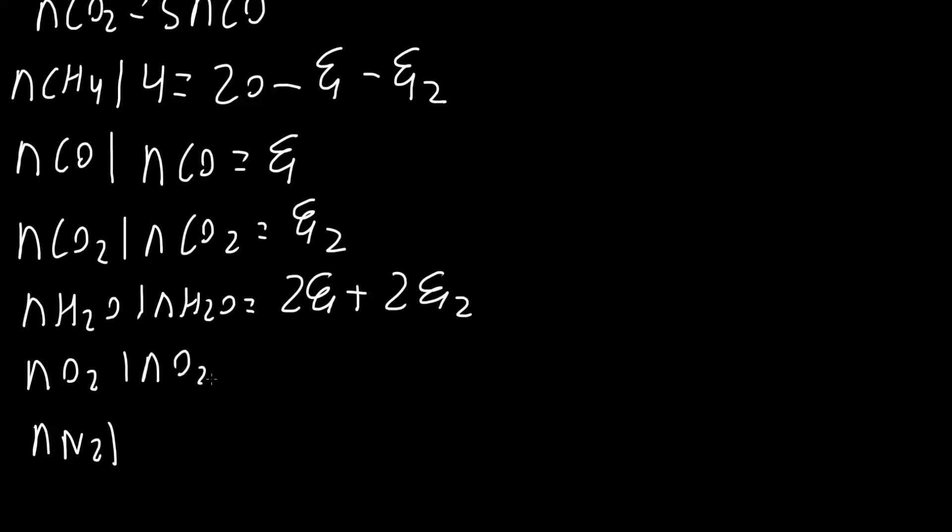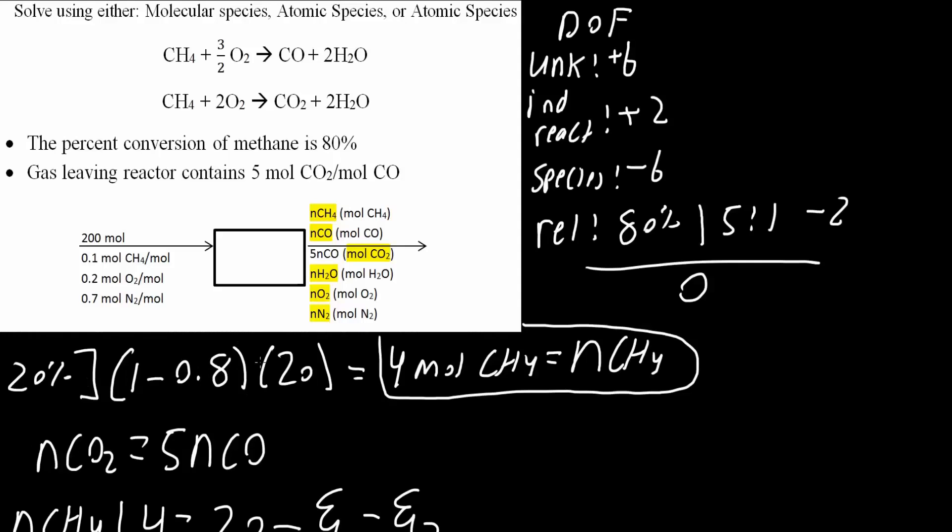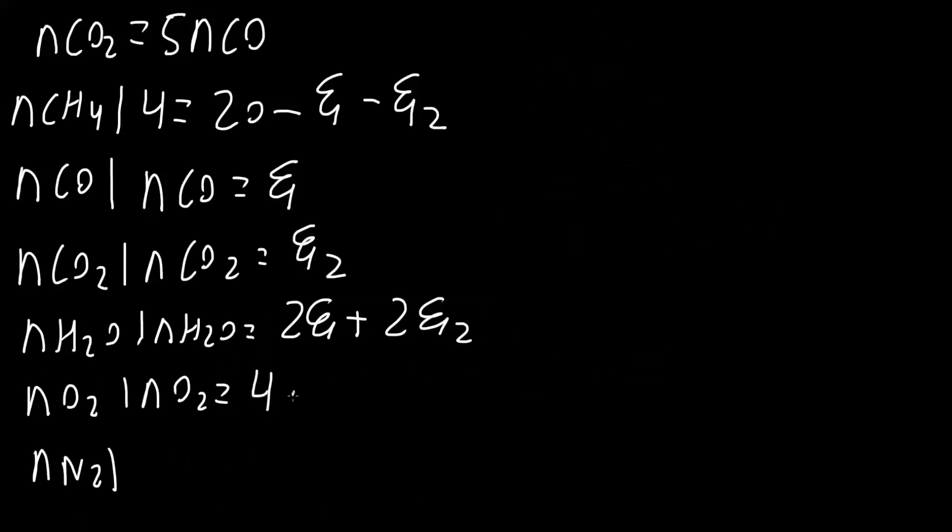Then oxygen, NO2 is equal to, now oxygen was in our input, we had 200 times 0.2, so we had 40. And in this case, since it's an input, we do subtraction. So we say 40 minus 3 halves extent of reaction one minus two times extent of reaction two.